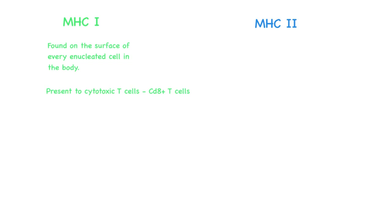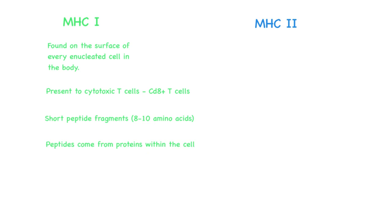MHC 1 molecules present short peptide fragments, usually 8 to 10 amino acids in length, that are derived from proteins within the cell. These peptides could include pieces of the cell's own degraded protein — self-proteins — or viral proteins if that specific cell has been infected. If a cytotoxic T cell recognizes the peptide presented within the MHC as foreign, it will trigger an immune response, activating the cytotoxic T cell to recognize and eliminate infected or abnormal cells.